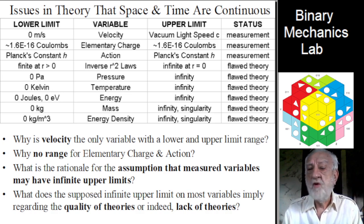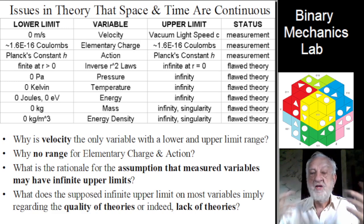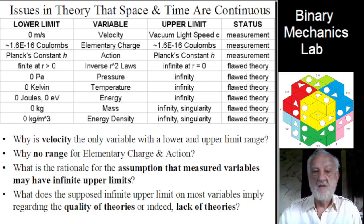On the other hand, for important variables like pressure, temperature, energy, mass, and energy density, zero lower limits are recognized. But flawed theory allows infinite upper limits.